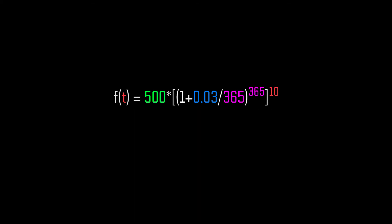For daily, plug in the numbers: f(t) = 500 times (1 + 0.03/365) to the power of 365 times 10. That equals 500 times 1.03045 to the power of 10, which gives you $674.92.